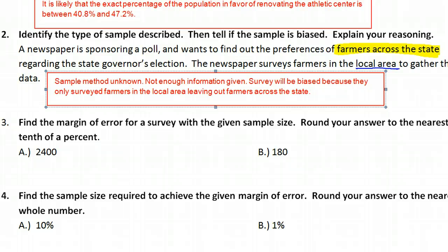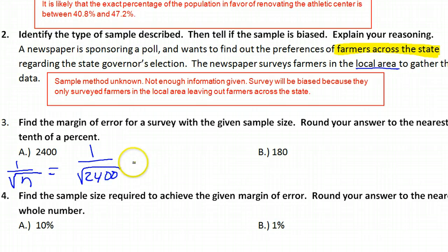This method was unknown, but the survey will be biased because they only surveyed farmers in the local area, leaving out farmers across the state, which is what our population was. Moving on to number three. Find the margin of error for a survey with a given sample size. We know that the margin for error is just one over the square root of the sample size. This would just be one over the square root of 2,400.